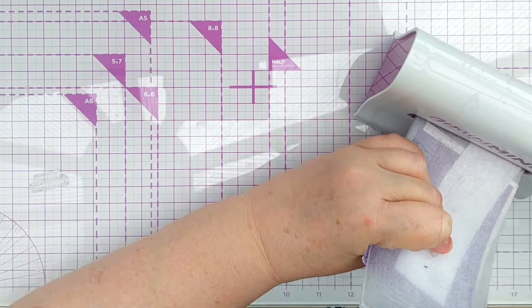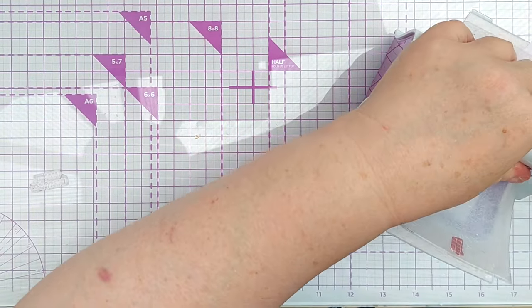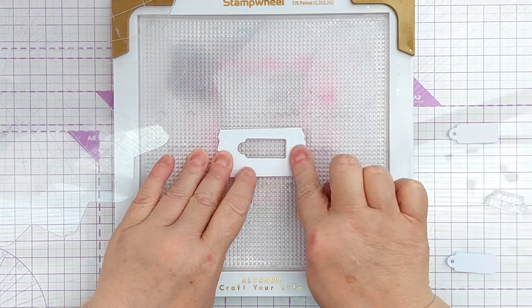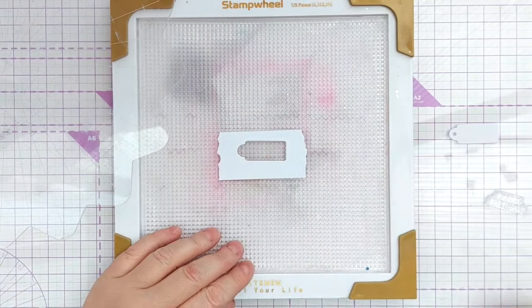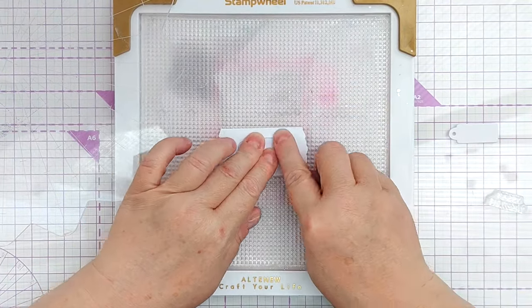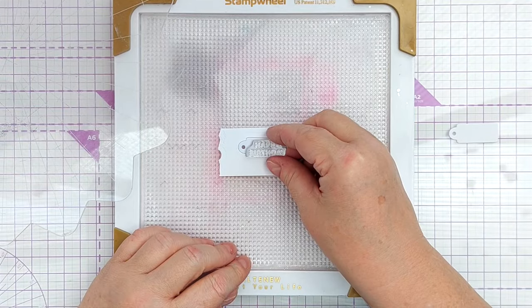To make sure that I stamped my sentiment in exactly the right place on my tags I used my Altenew stamp wheel because it's got a grip mat in it which allows me to easily stamp on small die cuts like this.